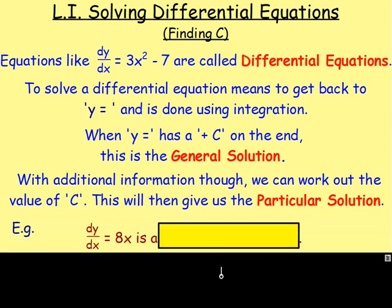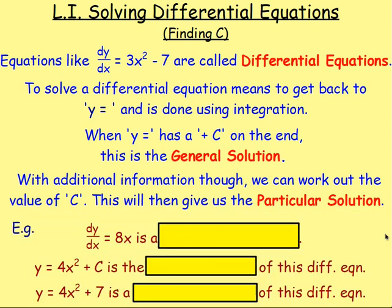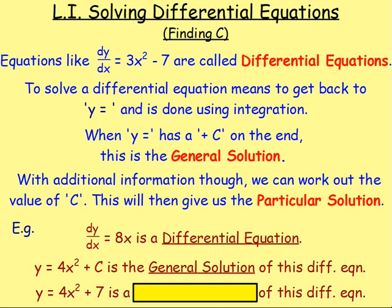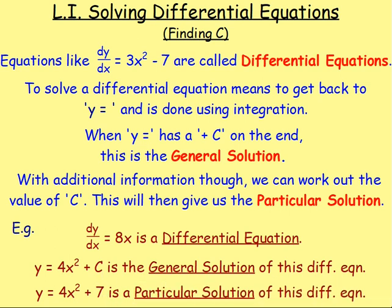So to sum up, if you have dy/dx equals something like 8x, that is known as a differential equation. If you integrate that and get back to y, you would get 4x squared. Remember you have a plus c at the end — that's the general solution. And if you then get more information and solve to find the value of c, that will be your particular solution.